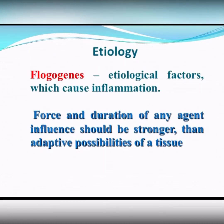Etiology of inflammation. All etiological factors which cause inflammation are named phlogogens. Phlogogens are etiological factors of inflammation. The force and duration of any damaging influence should be stronger than the adaptive possibilities of a tissue. In this case, we have damage of tissue which leads to inflammation.